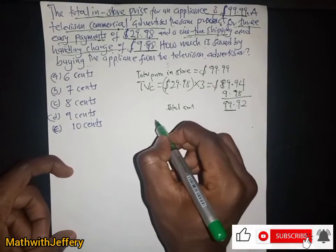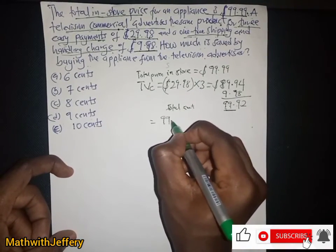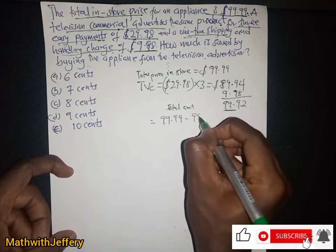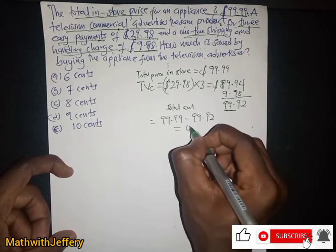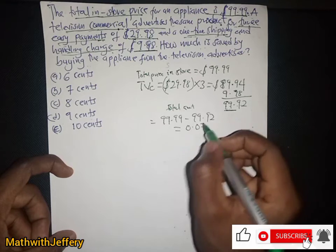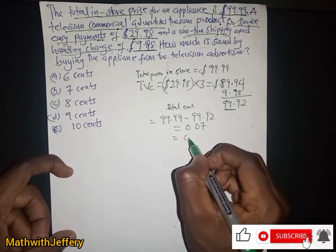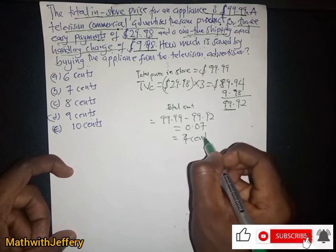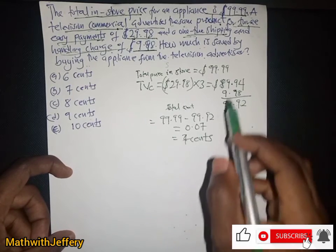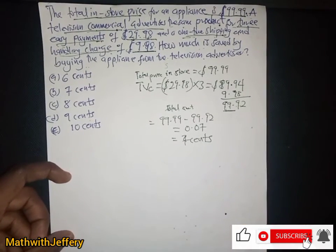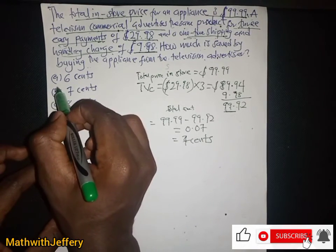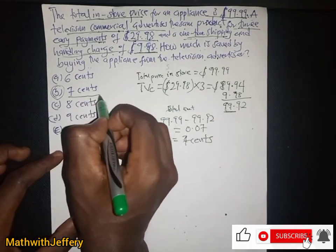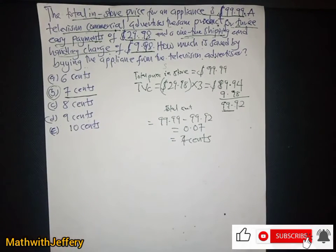We just calculate $99.99 minus $99.92, which equals $0.07. That means we save seven cents by buying it from the television advertiser. So the answer here is B — seven cents.